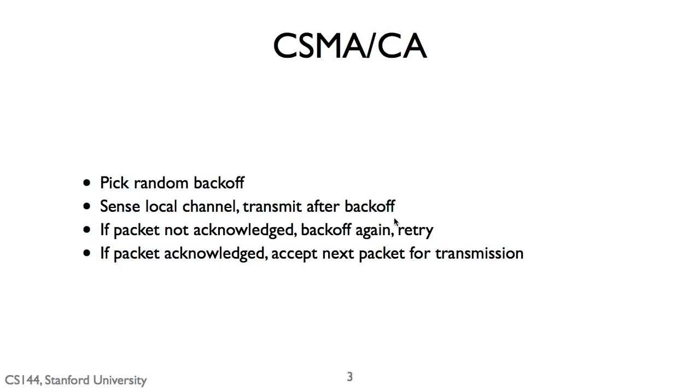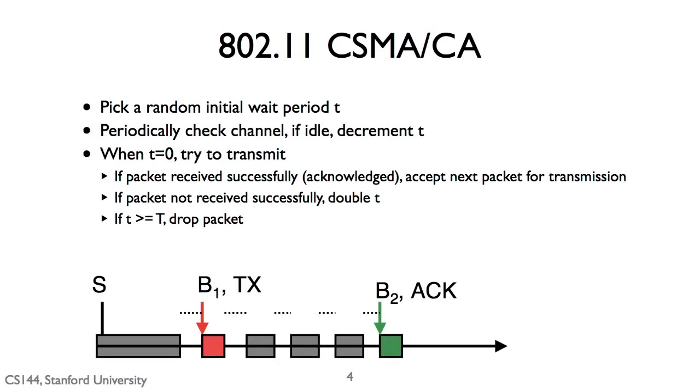And it's collision avoidance because you do this backoff again. So let's look at this more concretely. What is 802.11, so Wi-Fi, what does it do? So 802.11 has two modes. One is CSMA/CA, or it has many modes, but the common mode that everybody uses today is CSMA/CA. It also has another mode, reasonably common, called Request to Send, Clear to Send, which we'll talk about in a future video. But here let's talk about CSMA/CA.